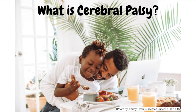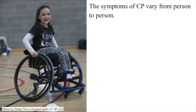CP is caused by abnormal brain development or damage to the developing brain that affects a person's ability to control his or her muscles. The symptoms of CP vary from person to person. A person with severe CP might need to use special equipment to be able to walk, or might not be able to walk at all and might need lifelong care. A person with mild CP, on the other hand, might walk a little awkwardly but might not need any special help.